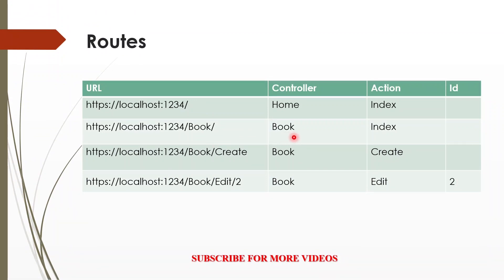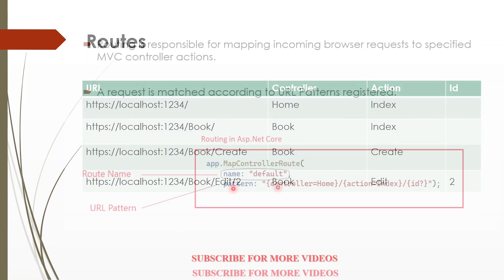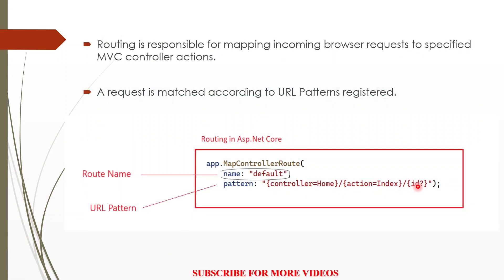If you have a Book controller and you are targeting the Index action, then slash Book will work for your URL. If you want to target the Create action of Book, you have to write slash Book/Create. And if you are targeting the Edit action with an id parameter, you write Book/Edit/{id}. So the pattern we use is controller, action, and id. By default we have Home controller, Index action, and optional id. Now let's look at our code and implement some routing.